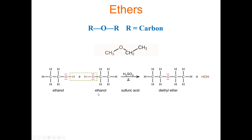An ether is similar, except instead of having an H on one side (R-O-H), it's R-O-R. So there are carbons on both sides of the oxygen atom in an ether. Here's an example: here's the oxygen atom — it doesn't have an H on one side, it has a CH3 on one side and a CH2 on the other. So when an oxygen atom is stuck in the middle of a molecule like this without an H, we call that an ether.